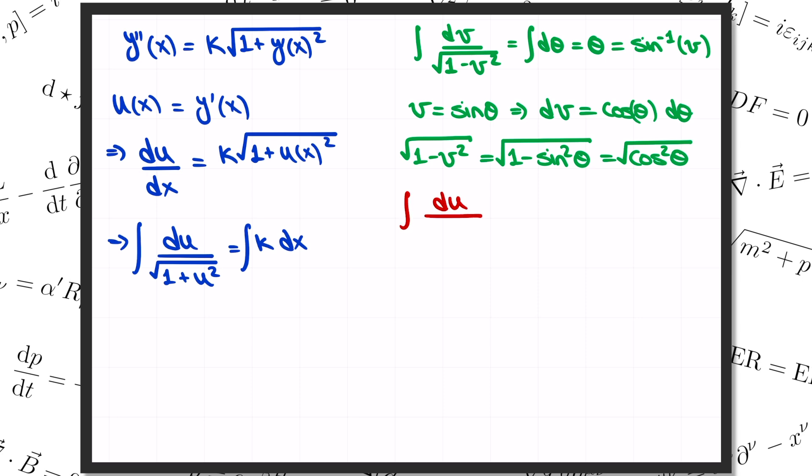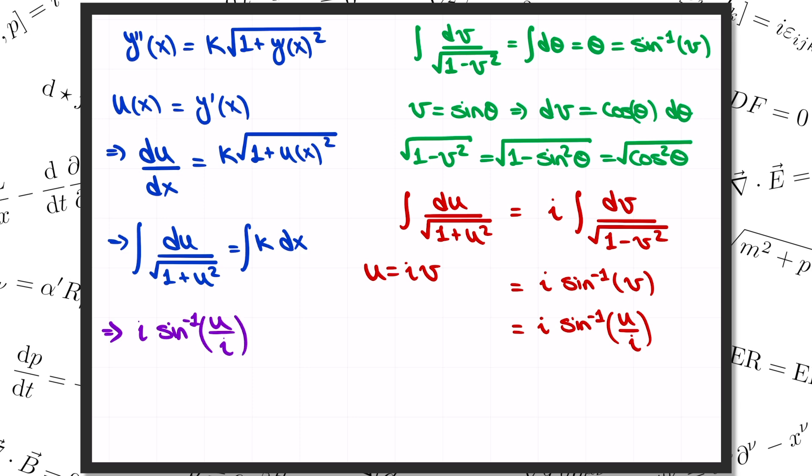Now that's not quite the integral that we wanted, where we had 1 plus u squared in the denominator. But if we do a change of variables and let u equals i times v, where i is the square root of minus 1, then the integral over u turns into i times the integral over v, divided by the square root of 1 minus v squared. And that's the integral we just did. So we get i times the inverse sine of v on the right. Or back in our original variable, i times the inverse sine of u divided by i. So we've done our integral, and we've learned that i times the inverse sine of u over i is equal to kappa times x, plus some integration constant that we'll call a.